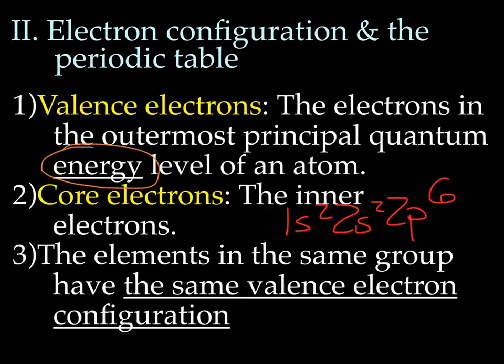The valence electrons are the electrons in the outermost principal quantum energy level. Remember, energy levels are represented by numbers. So those are the valence electrons, and those are the core electrons.